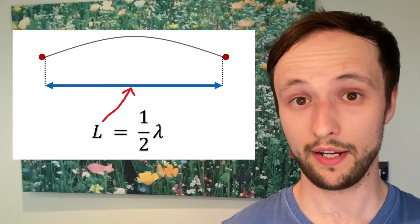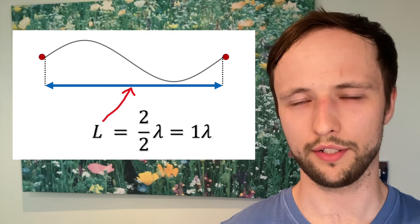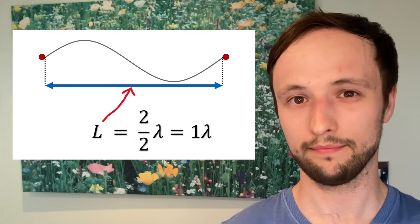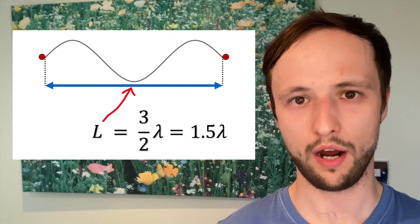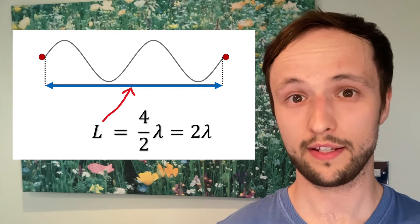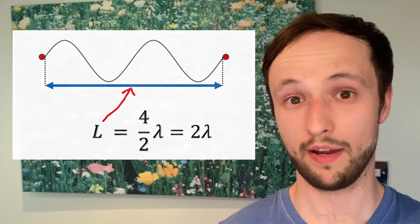This ends up meaning that standing waves will only form on our string if the length of the string is an integer number of half wavelengths. A string that has a length of one half wavelength, two half wavelengths (or one whole one), three half wavelengths (or one and a half), four half wavelengths (or two whole wavelengths), and so on. If the wavelengths of the wave that we send down the string fit on the string like this, we'll get our standing wave.